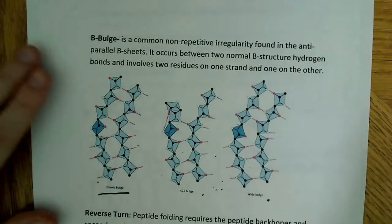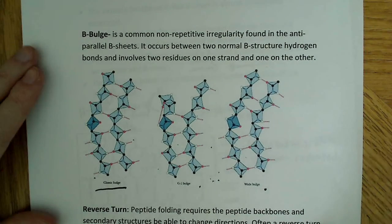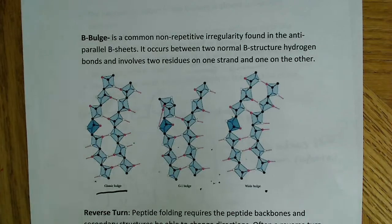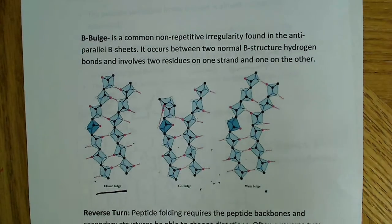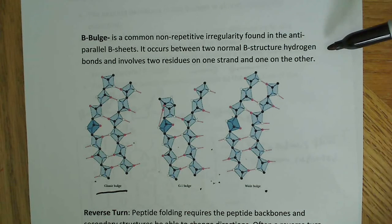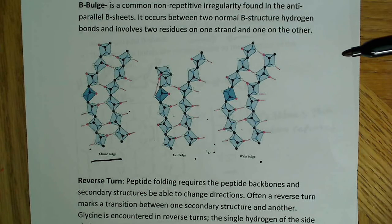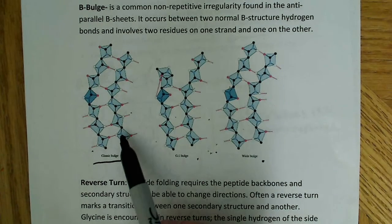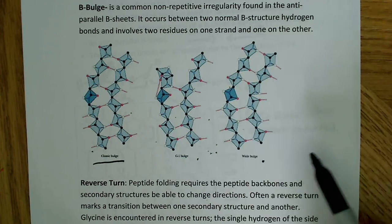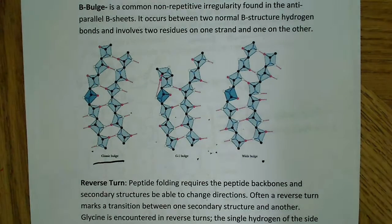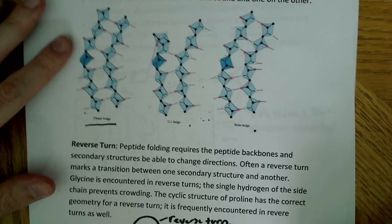In this section, I wanted to talk about two of the less common irregular shapes that you might find. One is the beta bulge, which is a common non-repetitive irregularity found in the anti-parallel beta sheets. It occurs between two normal beta structure hydrogen bonds and involves two residues on one strand and one on the other. Here are a couple different examples of a beta bulge. You'll notice the bulge in each of the structures. This is the classic bulge, this is a G1 bulge, and this is what's called a wide bulge. It's just important to be aware of this, not so much to draw the structures.